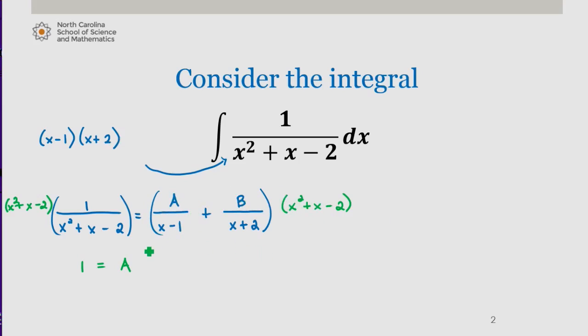We're left with x plus 2 in the numerator, plus b times x squared plus x minus 2 divided by x plus 2 leaves me with x minus 1 in the numerator.